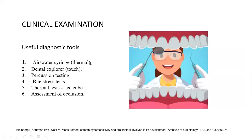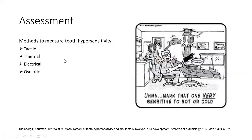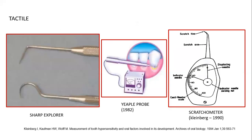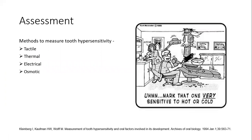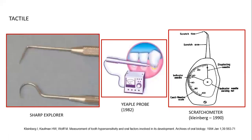Coming to the clinical examination, the following tools are used for diagnosis of dentin hypersensitivity: air water syringe, dental explorer, percussion testing, bite stress testing, thermal tests such as ice cube, and assessment of occlusion. The assessment methods to measure tooth hypersensitivity are tactile, thermal, electrical and osmotic.